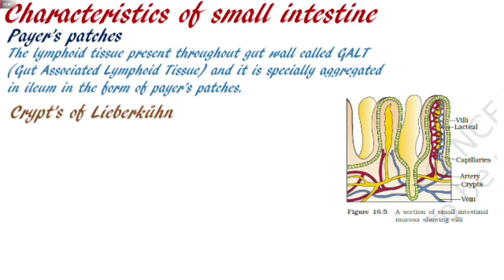Now we are talking about digestion, specifically the role of the crypts of Lieberkühn. I have also studied the histology of the gut. What are crypts? Our alimentary canal has 4 layers, and the innermost layer is the mucosal layer. In different regions, there are different functions, and these layers develop different modifications to perform those functions. In the small intestine, the mucosal layer has a modification called the crypts of Lieberkühn — 'crypts' means a pit, and Lieberkühn is a scientist's name.